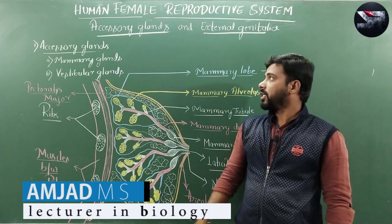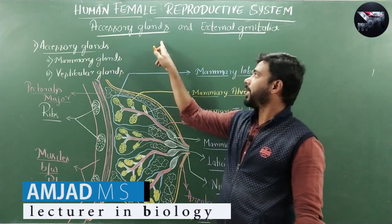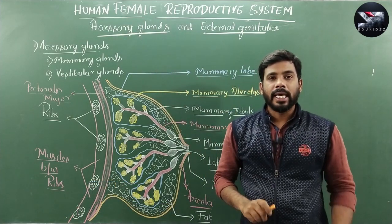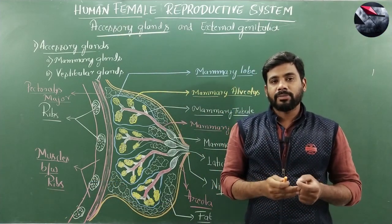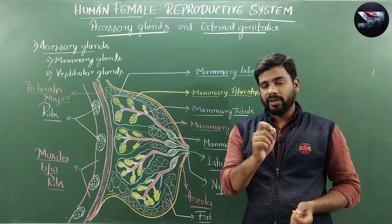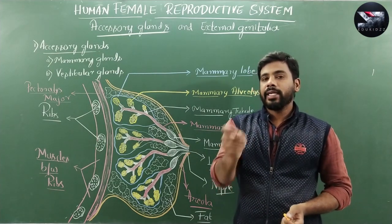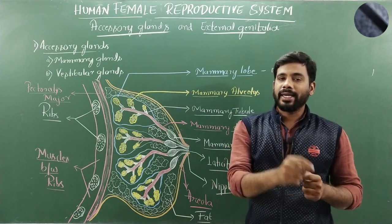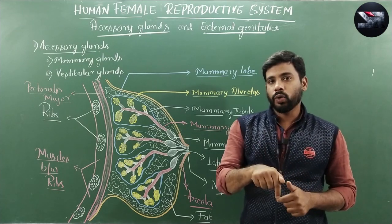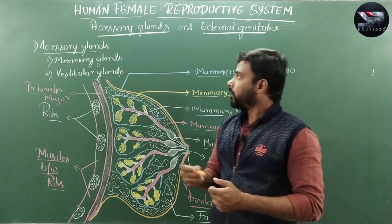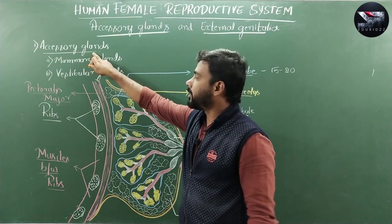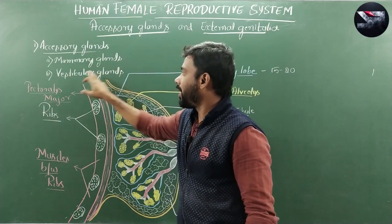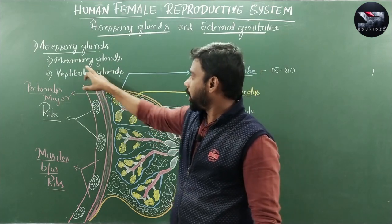Hello students, today in this lecture I am going to explain accessory glands and external genitalia of the human female reproductive system. In the previous video I explained the sectional view of the human female reproductive system showing various ducts and ovaries. Now let us move into the topic. The accessory glands include two types: mammary gland and vestibular gland.